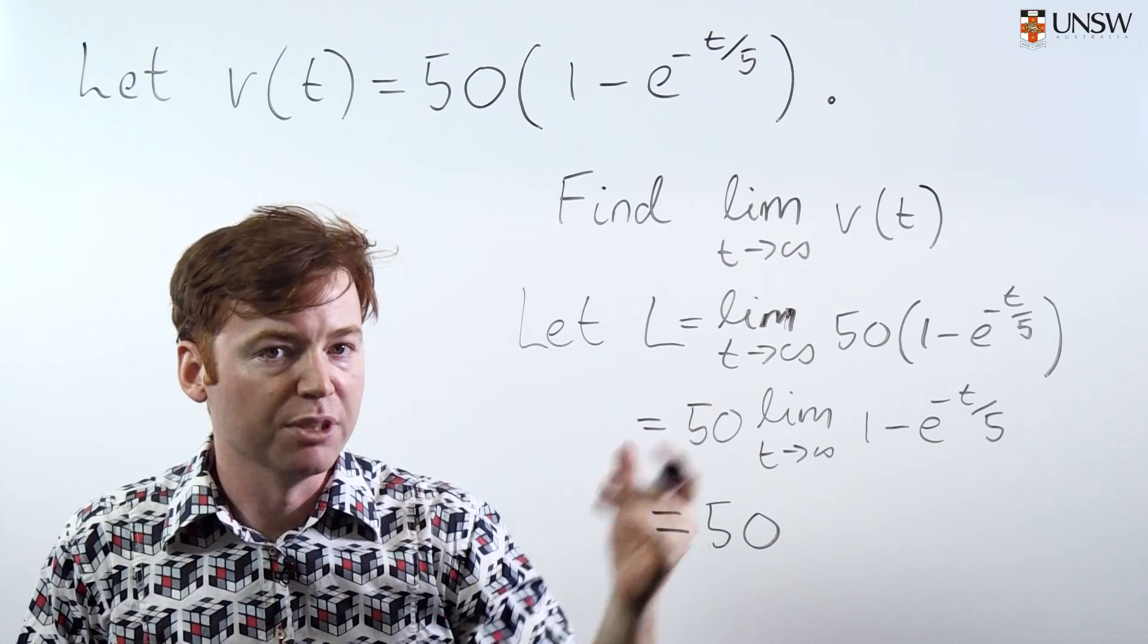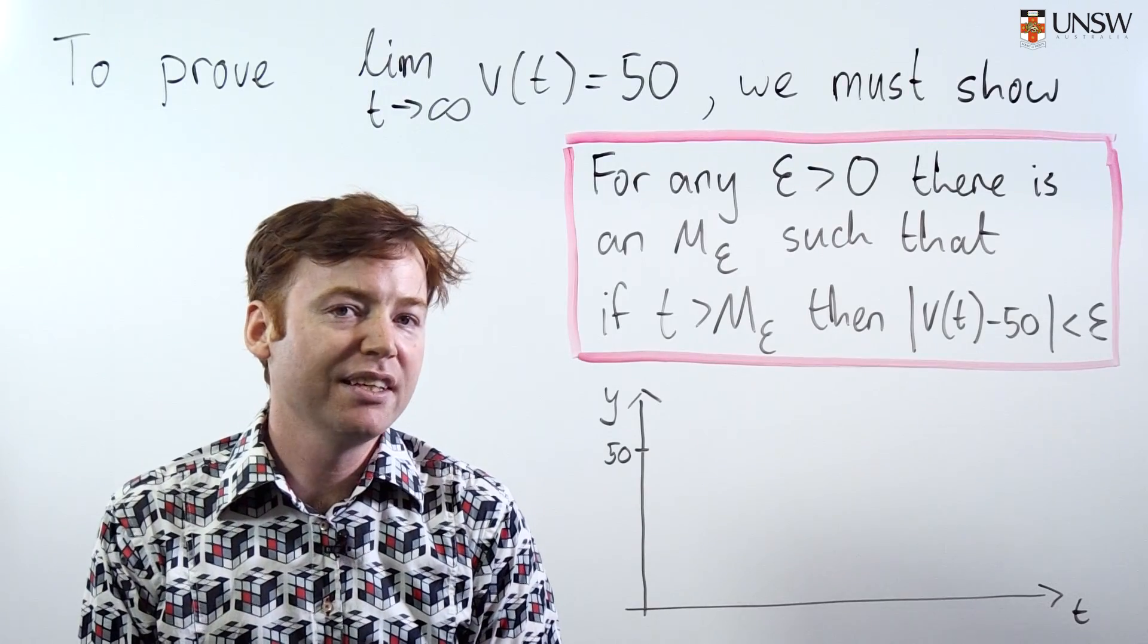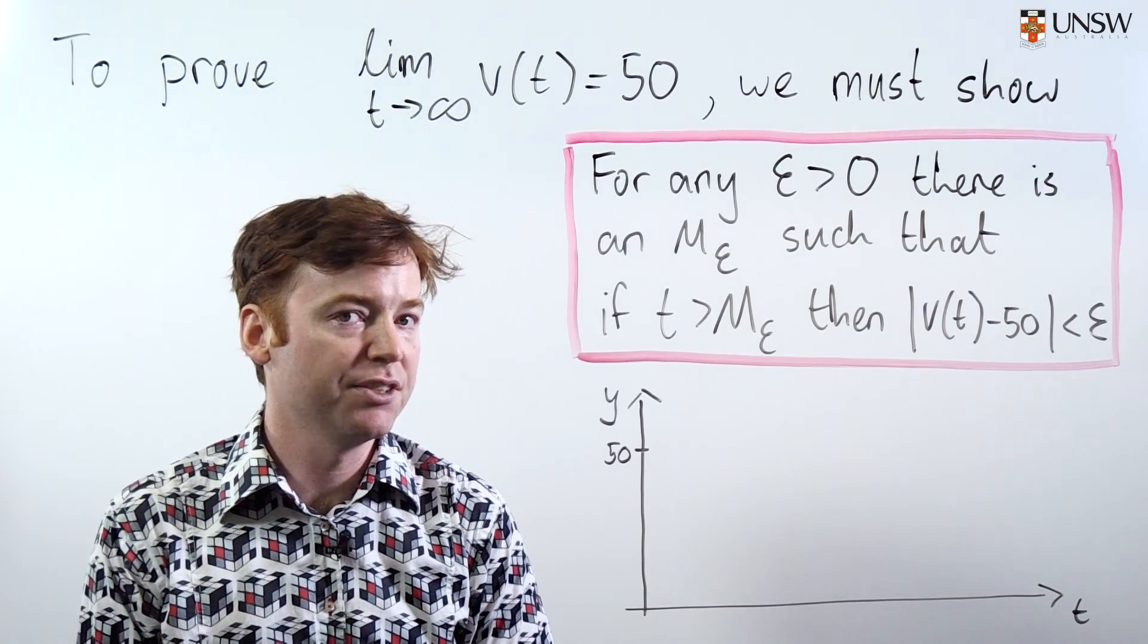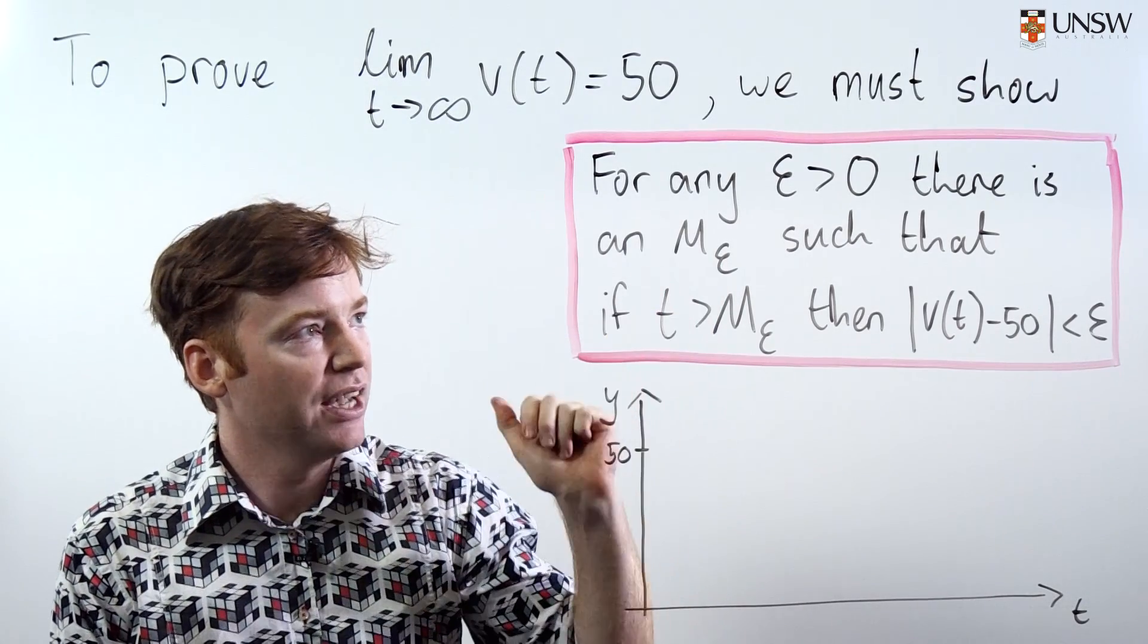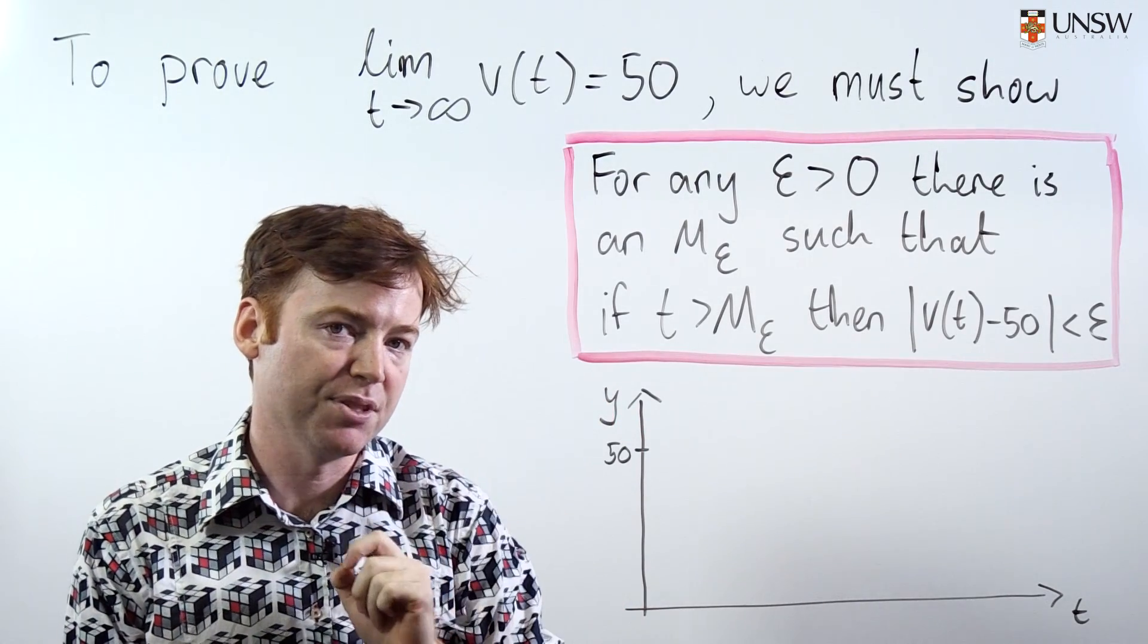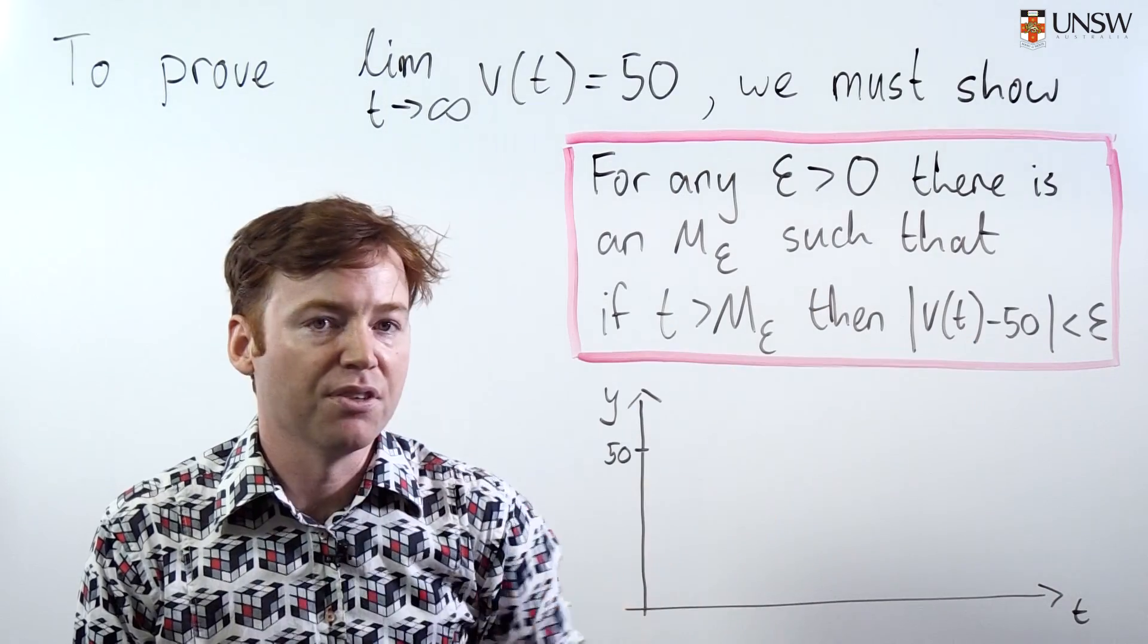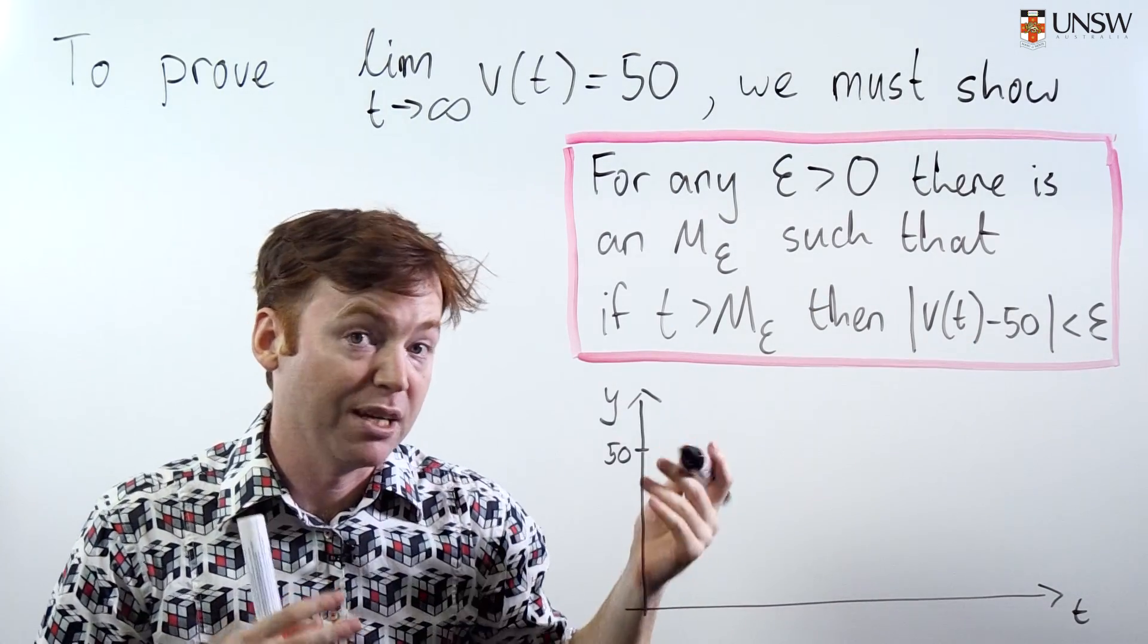Now let's formally prove that this is the limit. So now we think the limit at infinity might be 50. In order to prove that, what we actually have to do is use the formal definition of a limit at infinity, which is this definition right here. It says that for any epsilon greater than zero, there is some M epsilon such that for t bigger than M epsilon, then the function is within epsilon of its limit. What does all this mean in terms of perhaps a picture?